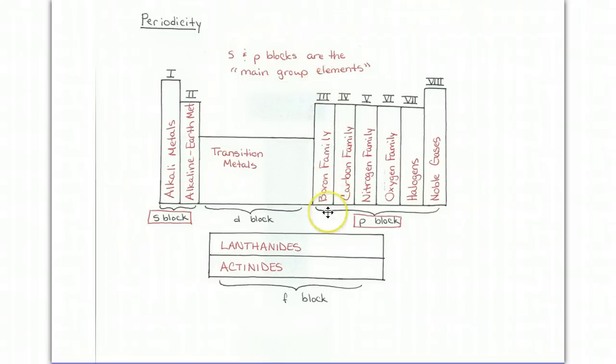The boron family, which happens to start with the element boron, carbon family starts with carbon, nitrogen family with nitrogen, oxygen family with oxygen. Those each have 3 valence, 4 valence, 5 valence, and 6 valence. If the element is in group 7, it's a halogen, and it has 7 valence. And if the element is in group 8, it's known as a noble gas, and it has 8 valence.